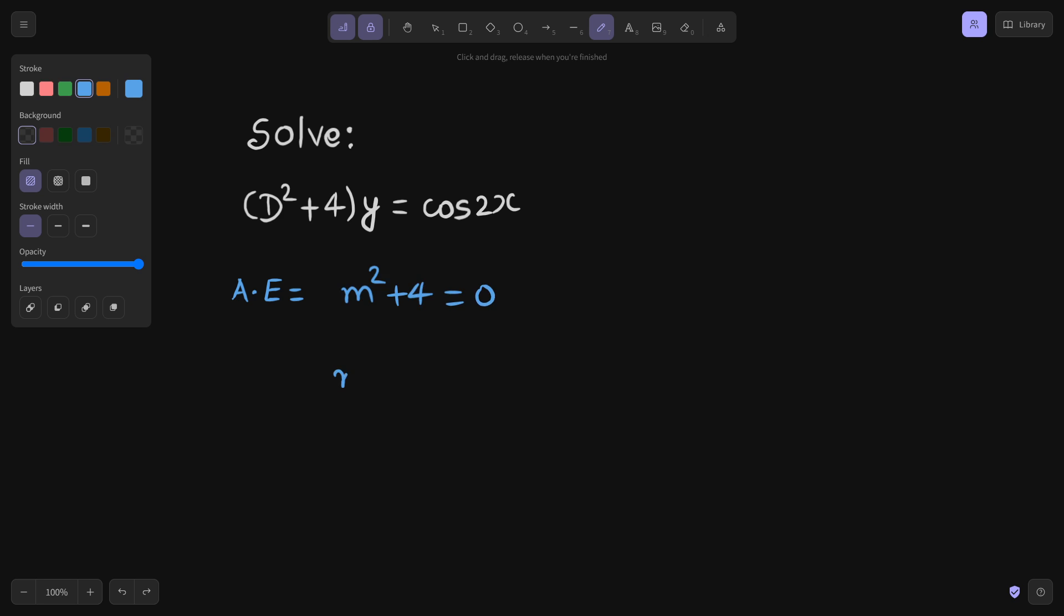From here you are getting M² equals minus 4, or M equals plus minus 2 iota.